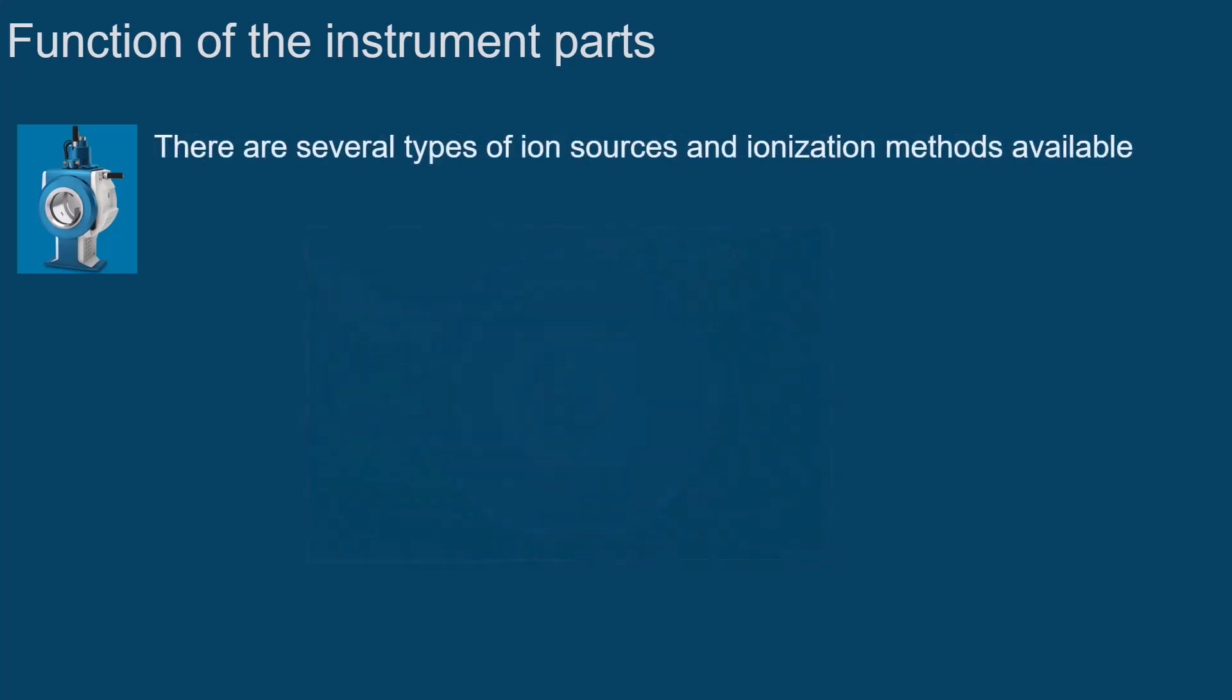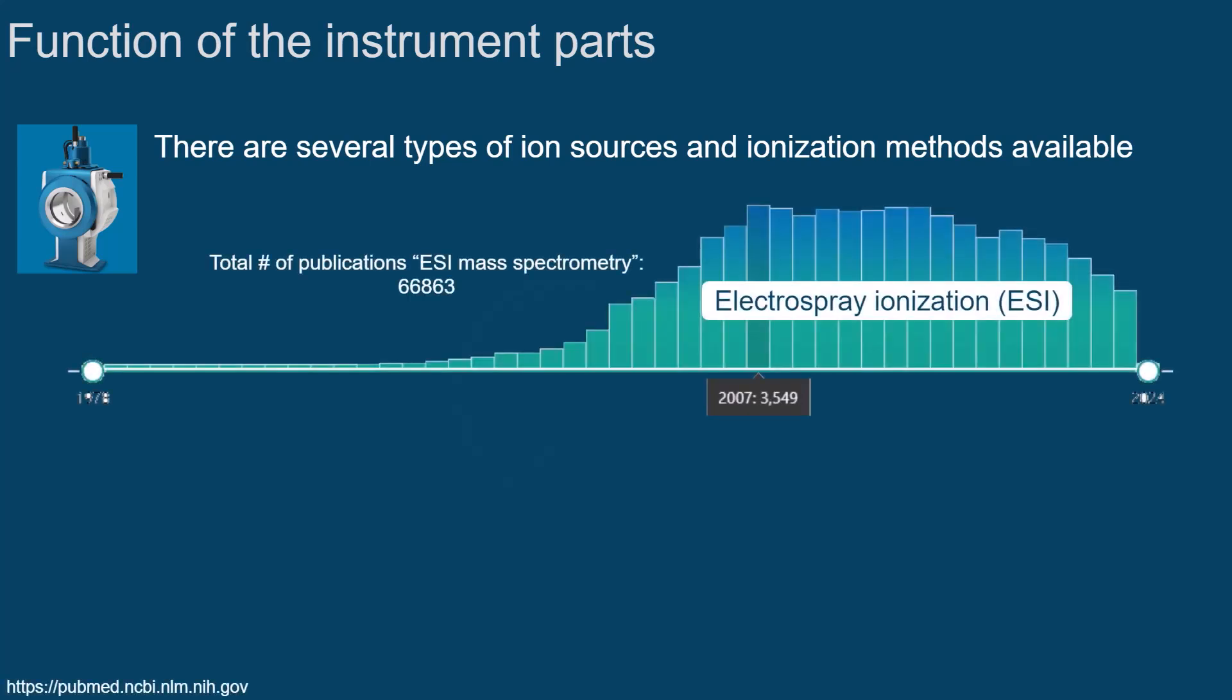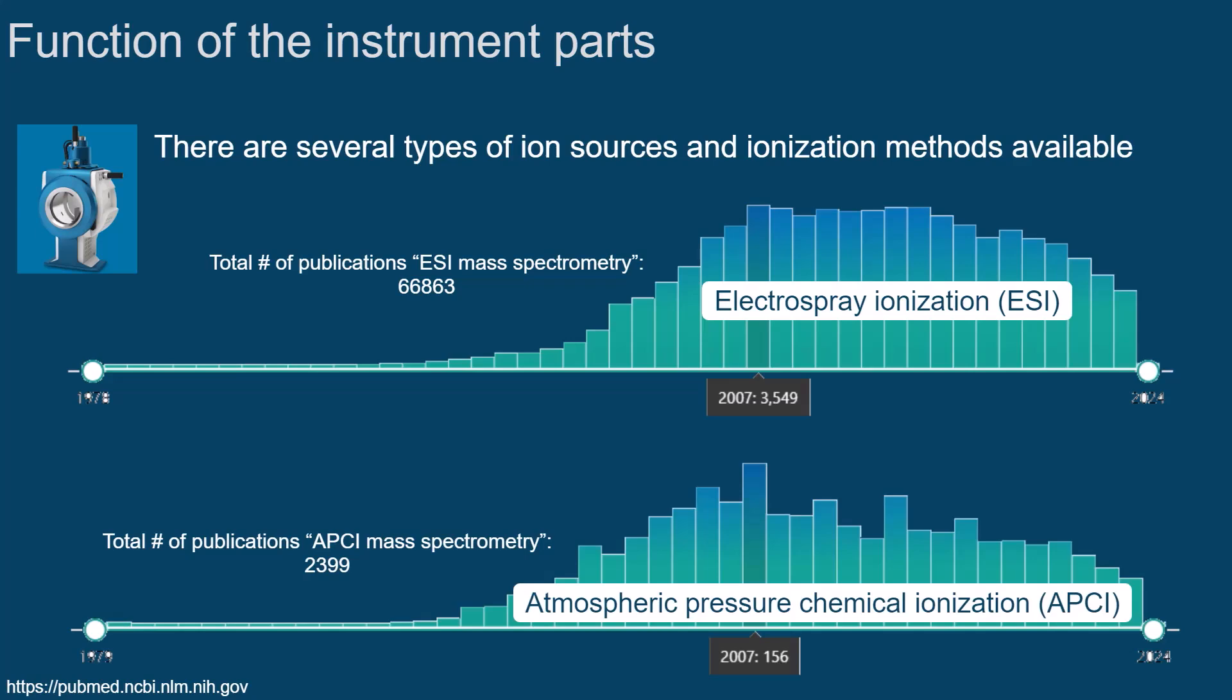There are several types of ion sources and ionization methods. Electrospray ionization is the most common, but atmospheric pressure ionization is also widely used.